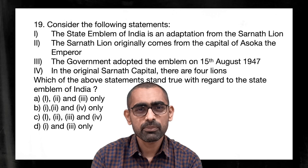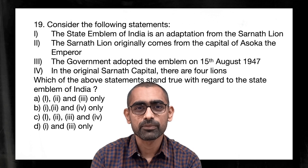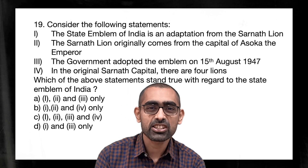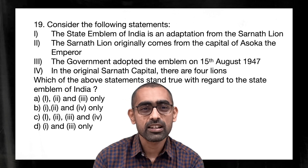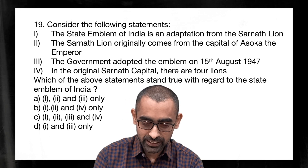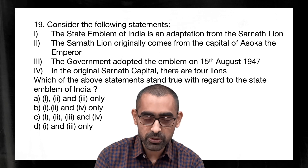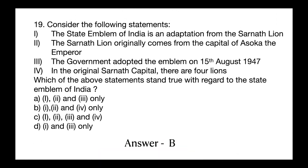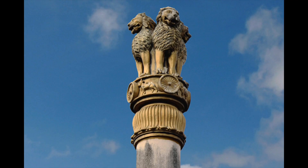Question number 19 is about our state emblem. We must know all facts — from where it was adopted and how it was used in ancient history before being adopted officially. The only incorrect element in this question is the date of adoption, which happened sometime after independence. Many questions are coming from history with contemporary relevance; concepts in history that have modern significance are favorites and you should know everything about them in detail.